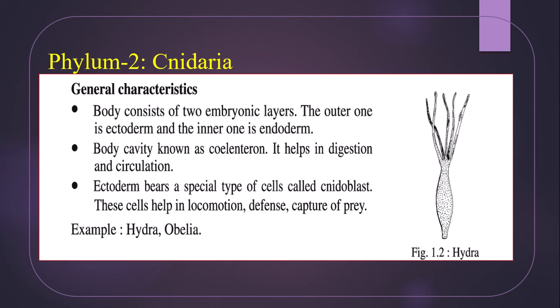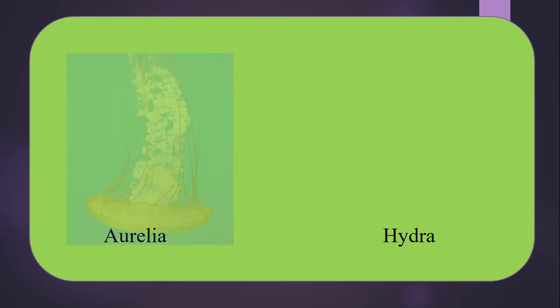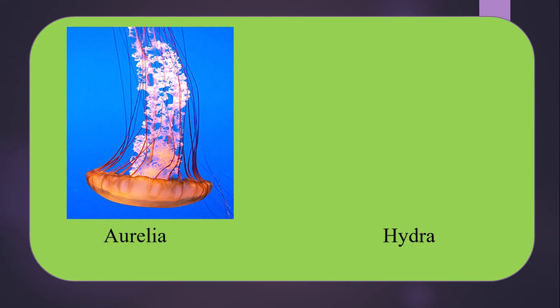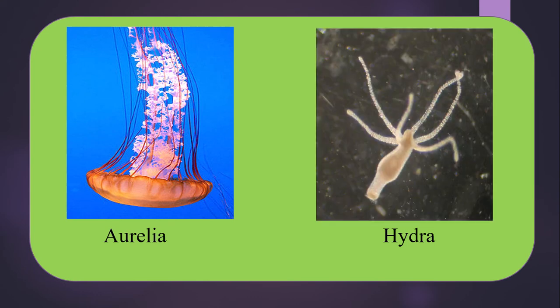Number two, the body cavity is known as coelenteron, which helps in digestion and circulation. Number three, the ectoderm bears a special type of cells called cnidoblasts; these cells help in locomotion, defense, and capture of prey. Examples include Hydra, Obelia, Aurelia, etc. This is the picture of Aurelia, or jellyfish, and this is a picture of Hydra.